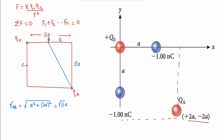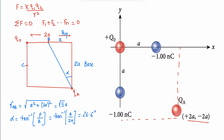Now there is also an angle alpha. Find this angle. I can say alpha equals tangent inverse, because this behaves like the base and this part behaves like the perpendicular. So alpha = tan⁻¹(perpendicular / base) = tan⁻¹(a / 2a). Solving this, the answer is 26.6 degrees.